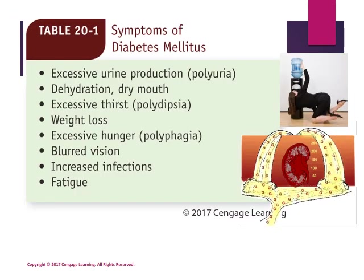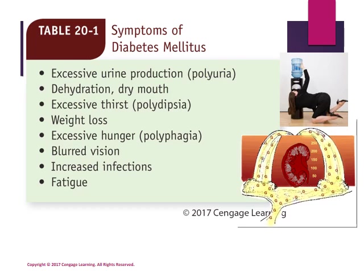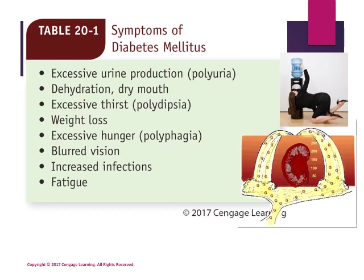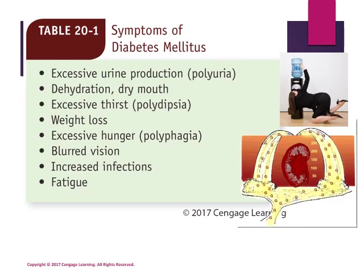Table 20-1 from your textbook lists the symptoms of diabetes mellitus — be familiar with them. They may include polyuria (excessive urine production), dehydration and dry mouth, excessive thirst or polydipsia, weight loss, excessive hunger or polyphagia, blurred vision which can result from hyperosmolar fluids damaging sensitive eye tissue, increased infections as a result of increased glucose availability to bacteria, and fatigue.